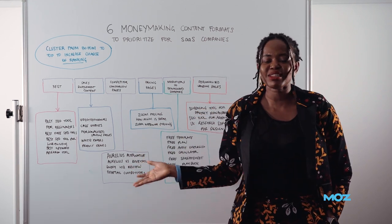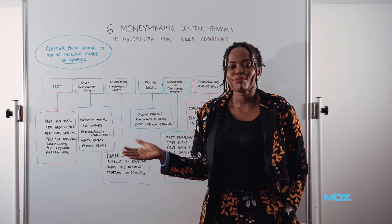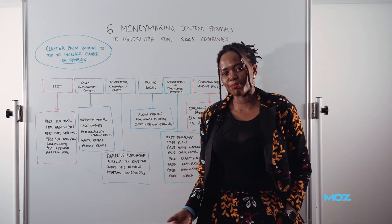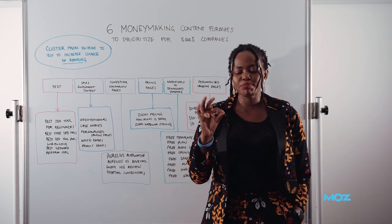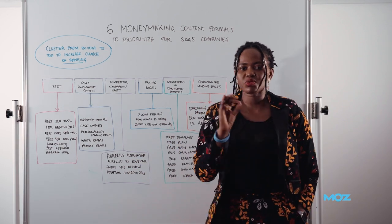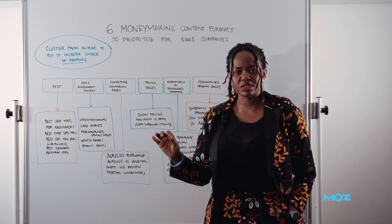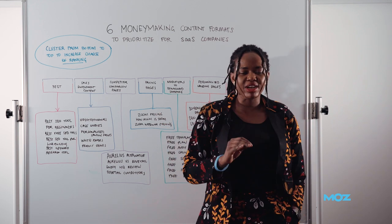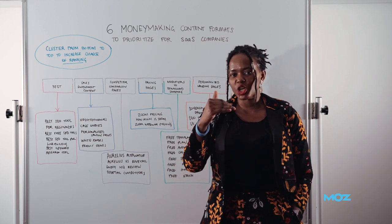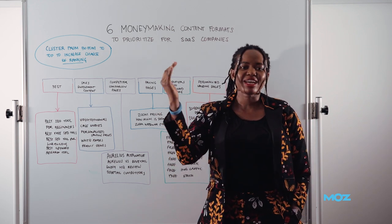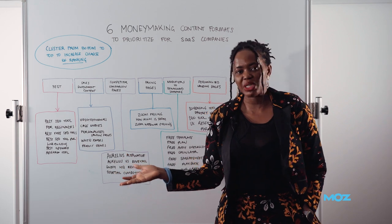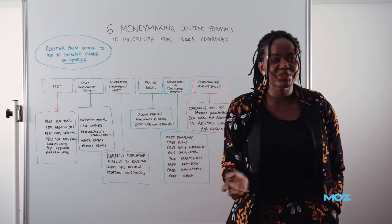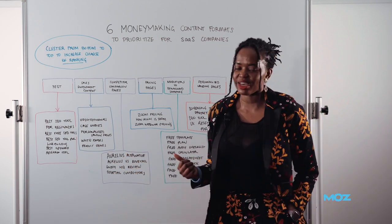In fact, it almost never happens. But if you start from the bottom, then you can pick one keyword at a time, rank for those, make your way to the middle, and then at the top use your pillar content to bring everything together.